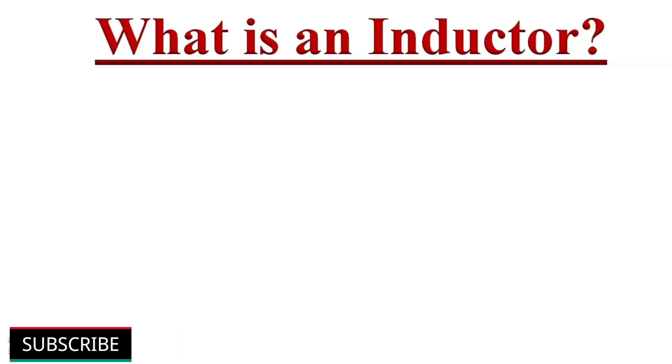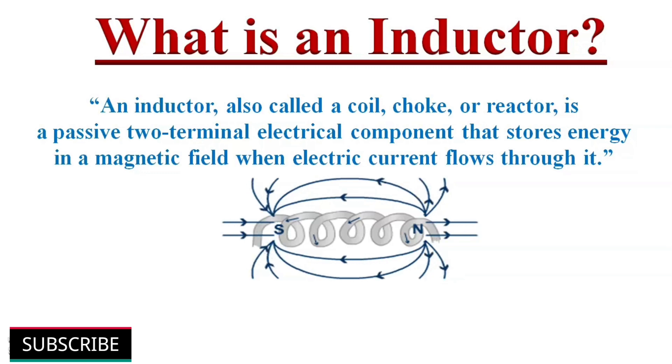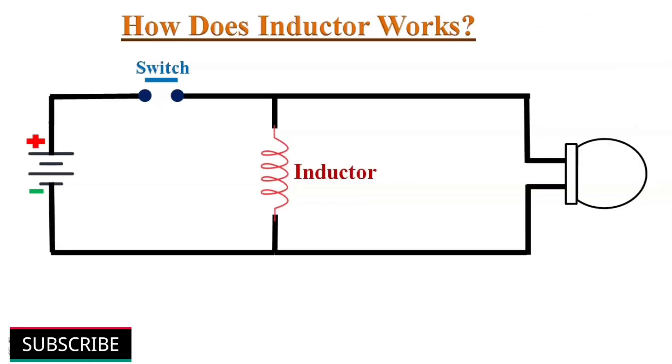An inductor, also called a coil, choke, or reactor, is a passive two-terminal electrical component that stores energy in the form of a magnetic field when electric current flows through it. Let us try to understand how an inductor works with the help of a simple circuit.